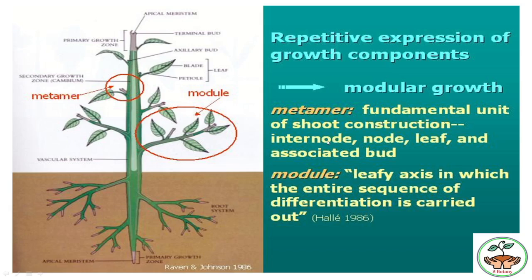The metamer is the fundamental unit of the shoot's construction. It includes the internode, node, leaf, and the associated bud. The module is the leaf axis in which the entire sequence of differentiation is carried out.